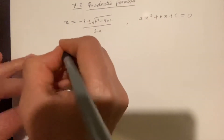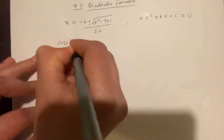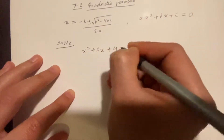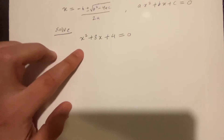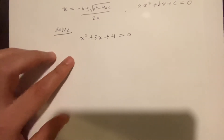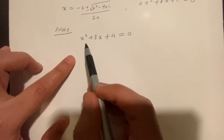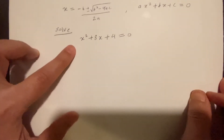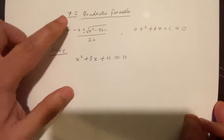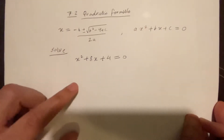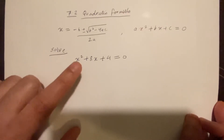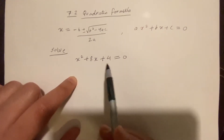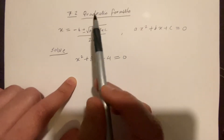So let's say I'm going to solve the equation x squared plus 8x plus 4 equals 0. Now, we know we can also solve this by the square root property, which we did in section 7.1. So you may want to check that previous lecture. But in this section, we will solve this by the quadratic formula.